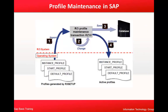You can do maintenance on these three profiles: the default profile, the start profile, and the instance profile. These exist at the OS level. Using the RG10 transaction, they can be imported into SAP and saved in the database. After that, you need to activate them — these are the three sets of activated profiles in SAP.